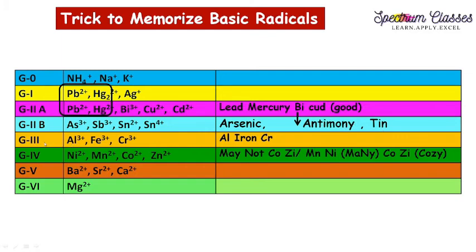Group Three contains aluminium, iron, and chromium — aluminium is 3+ and is in the third period of the periodic table. A mnemonic to remember Group Three is 'all iron cars' (Al, Fe, Cr). For Group Four, we have nickel, manganese, cobalt, and zinc. The mnemonic is 'may not cozy' (Mn, Ni, Co, Zn), or 'many cozy' — whichever you find easier. This is a scientific method to memorize these groups.